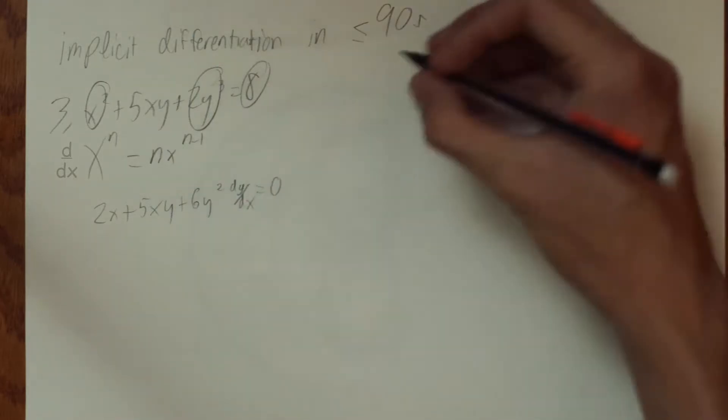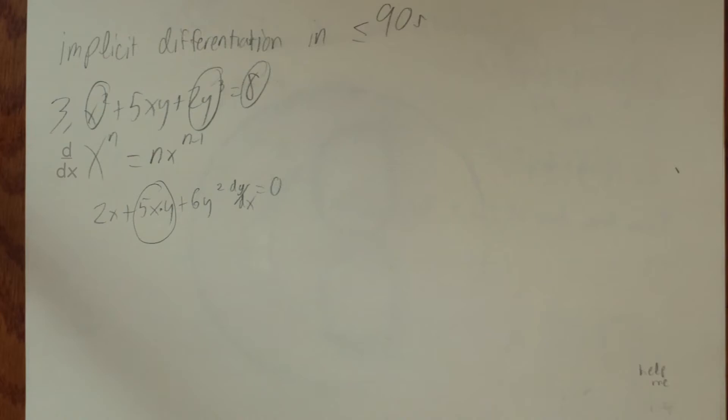Now, you must get the derivative of 5xy, which is actually 5x times y. 5xy is two terms, so you must use the product rule.